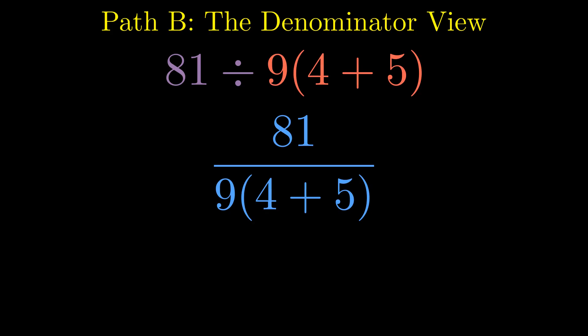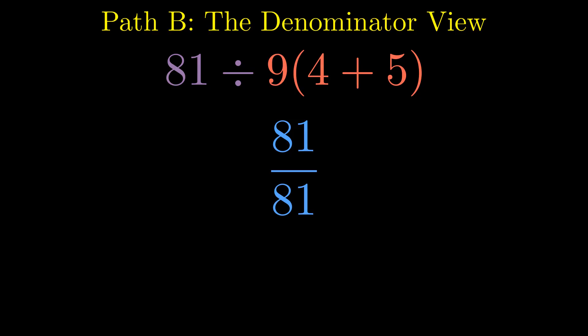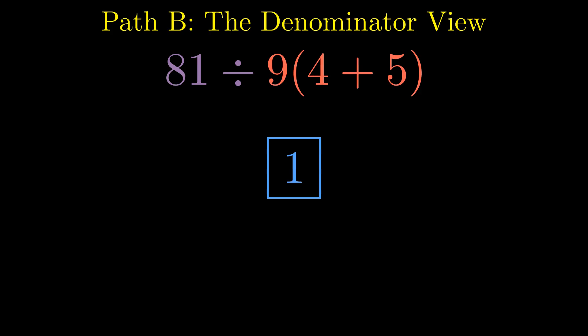Rewrite it as a fraction and the structure becomes obvious. Everything below the line must be simplified as one complete expression before we divide. Parentheses still go first: 4 plus 5 becomes 9. Next, we complete the denominator: 9 multiplied by 9 is 81. Now we have 81 in the numerator and 81 in the denominator, and the final division gives us 1. Same starting point, different interpretation, opposite result.